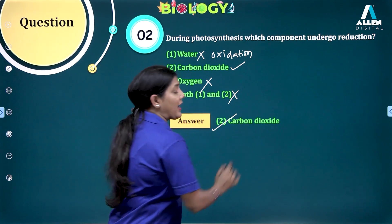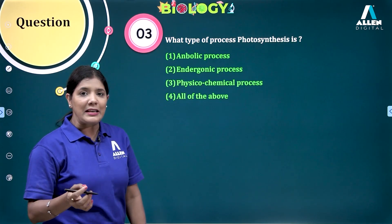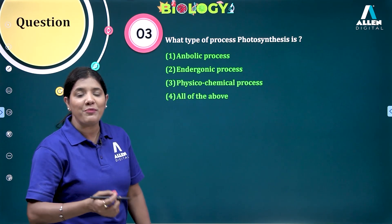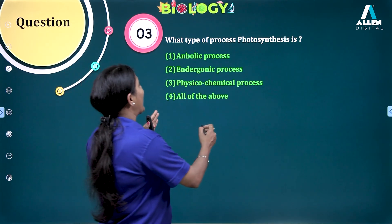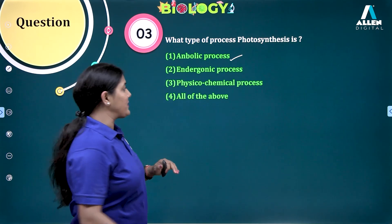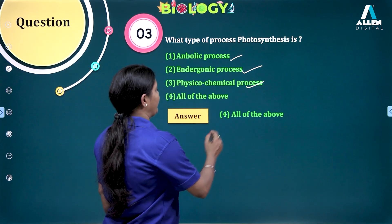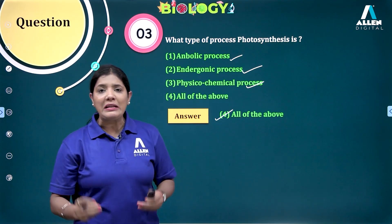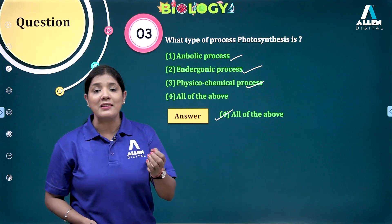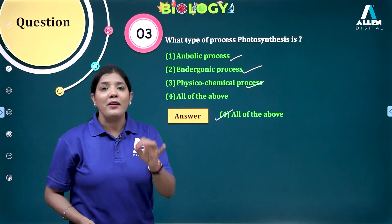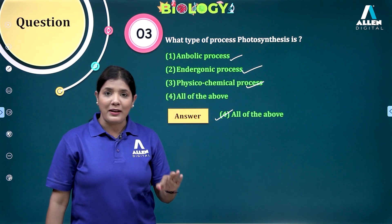The third question: what type of process is photosynthesis? We have learned it is an anabolic process, an endergonic process, a photo biochemical process, a physico-chemical process, and a type of redox reaction. Looking at the options — anabolic process, physico-chemical process — the answer is all of the above. Under the introduction to photosynthesis we have learnt various terminologies. Hope all concepts are clear. Thank you.